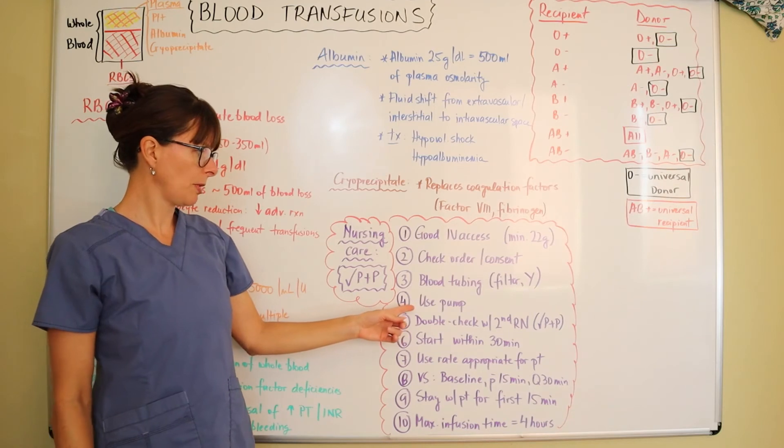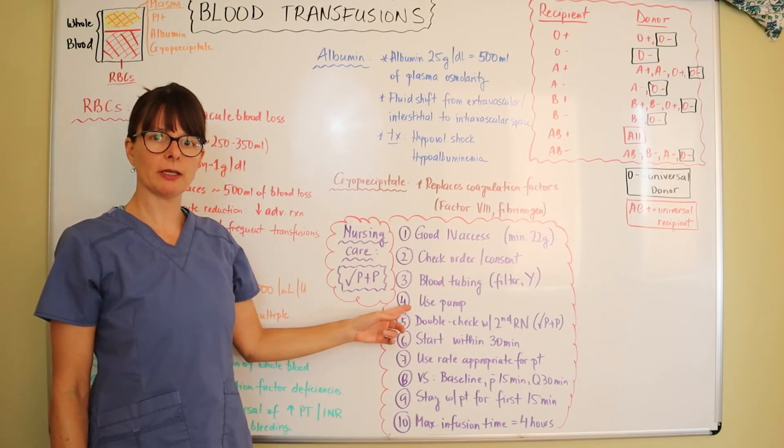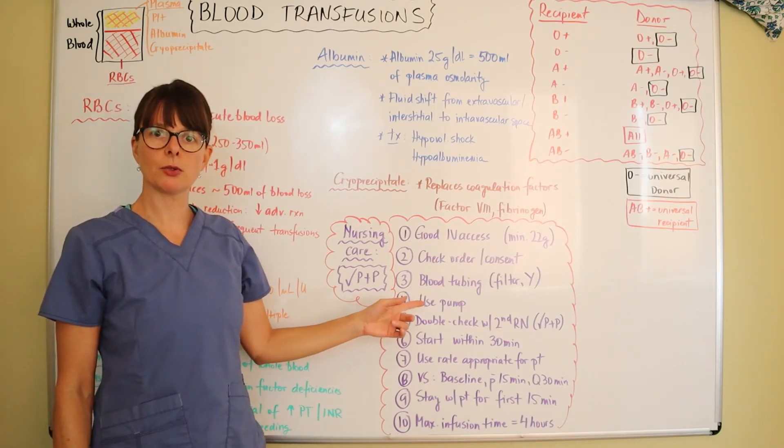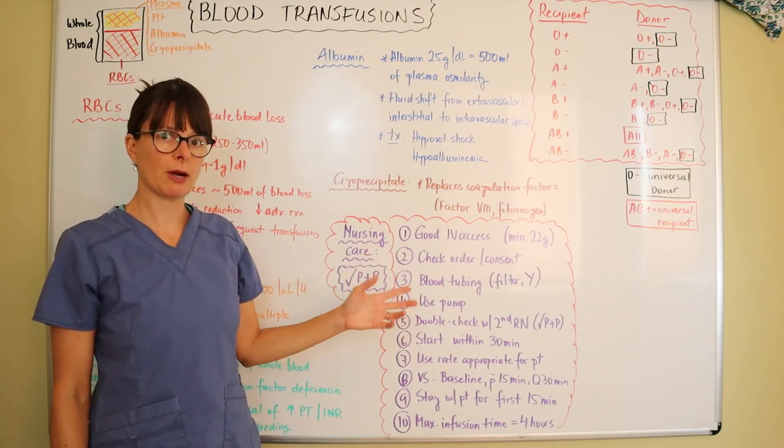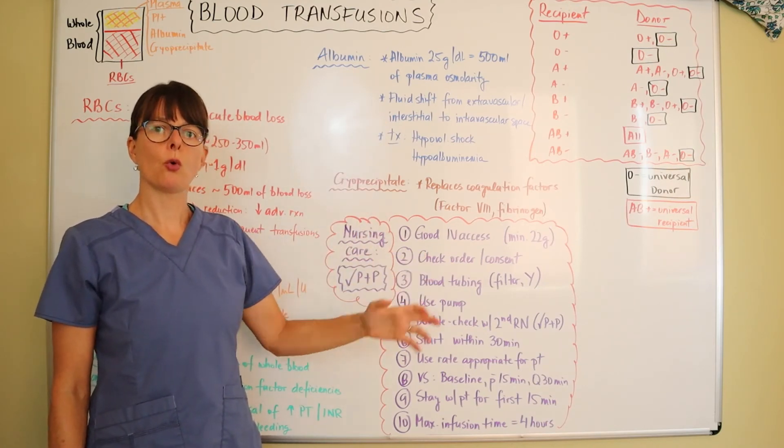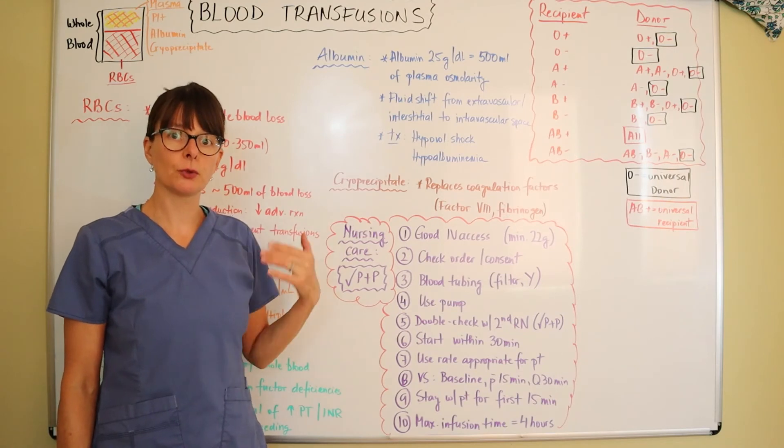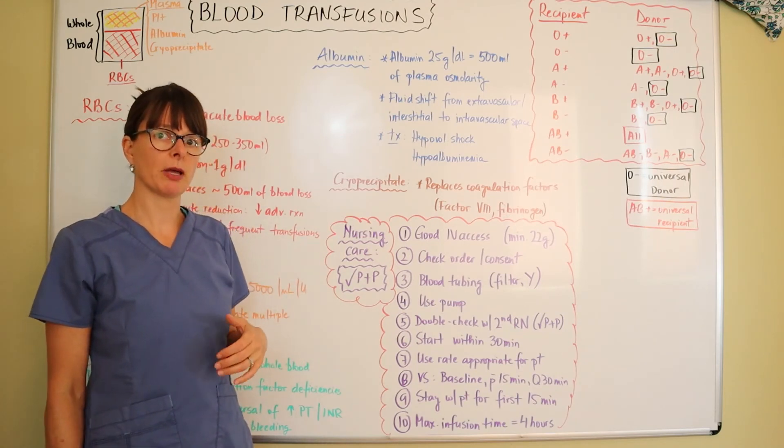We typically want to use a pump. Again, if this is acute blood loss and the patient needs many units of blood frequently, we're not going to use the pump. We're either going to let it free flow or even use a rapid infuser to administer that blood fairly quickly.